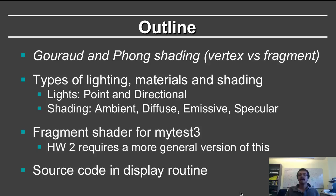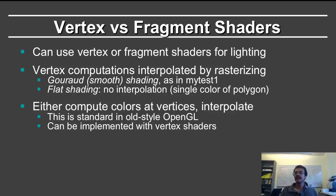Let me give you a brief outline of what the rest of this lecture is about. First we'll talk about Gouraud and Phong shading, which in the context of the OpenGL pipeline largely correspond to vertex or fragment shading. Then we'll talk about the types of lighting, materials, and shading — including point and directional light sources, and ambient, diffuse, emissive, and specular shading. We'll describe the fragment shader used in myTest3, and you will need a somewhat generalized version of this for homework 2. We'll also discuss the source code in the display routine.